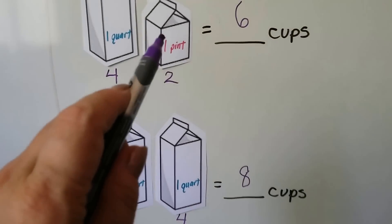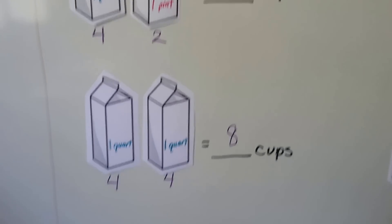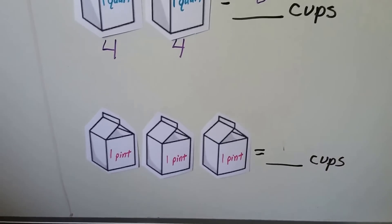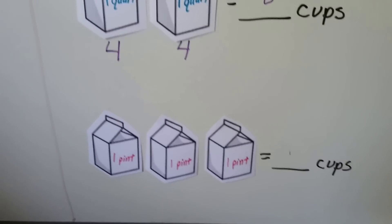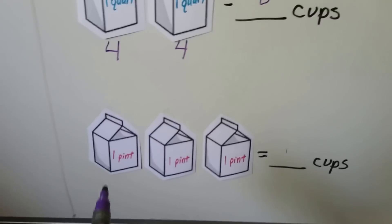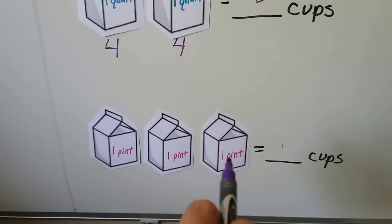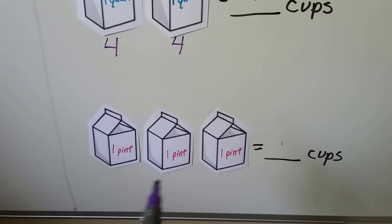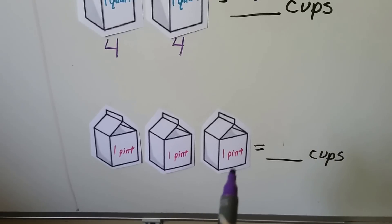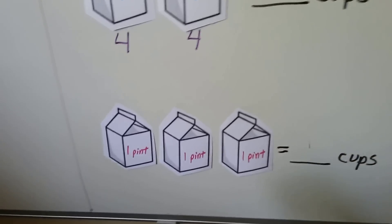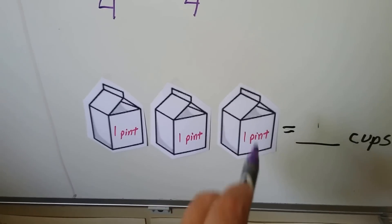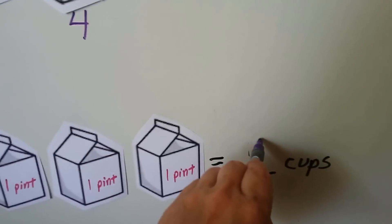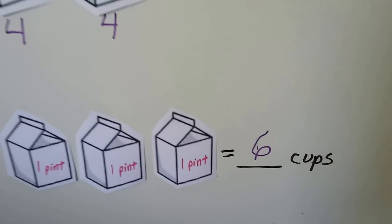Now remember, a pint is two cups. So what would three pints be? How many cups? That's two cups, that's two cups, and that's two cups. We could skip count by two: two, four, six. We could also do two plus two plus two. Two plus two is four, plus two is six. So that'd be six cups.